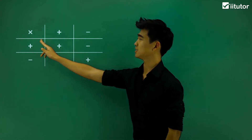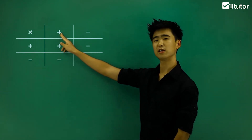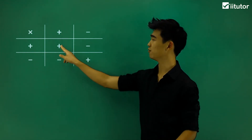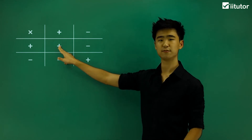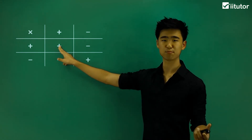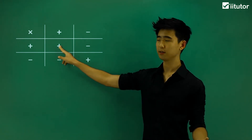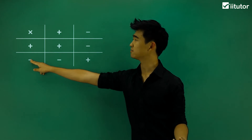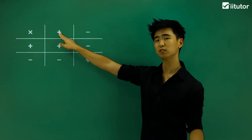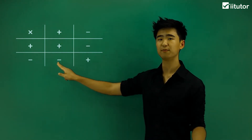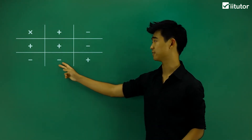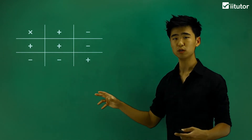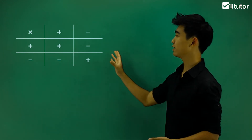Positive number times a positive number, or positive signs times positive signs, will give me a positive outcome. So the sign is positive. And also, a negative sign multiplied by a positive sign will give me a negative sign. So that's how we operate this table.